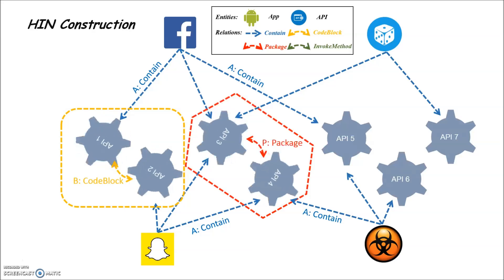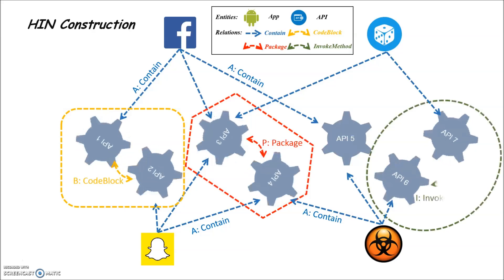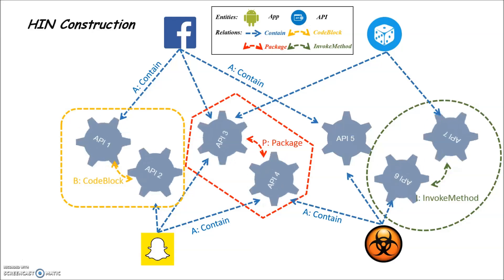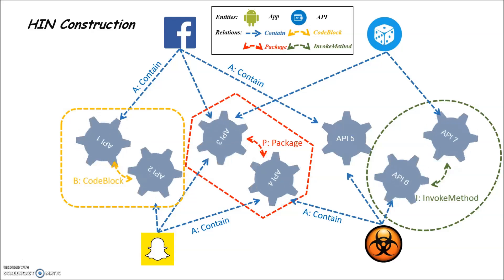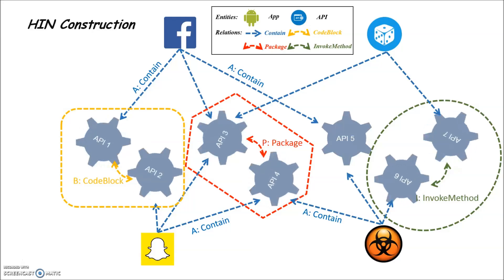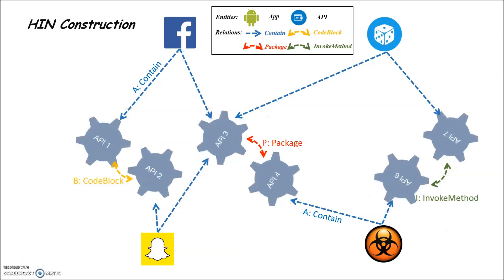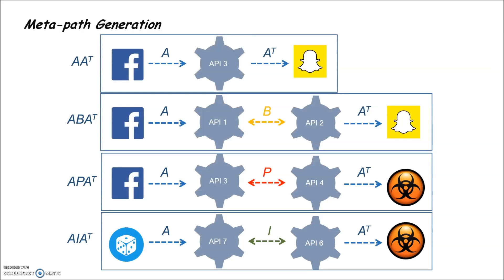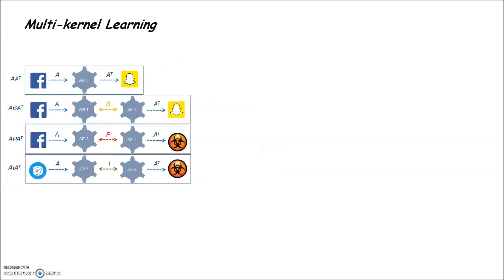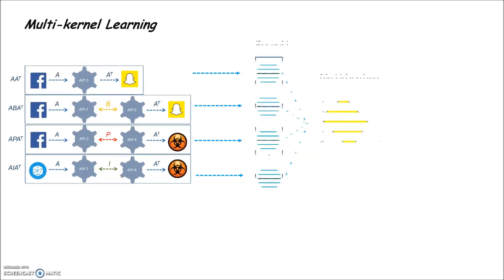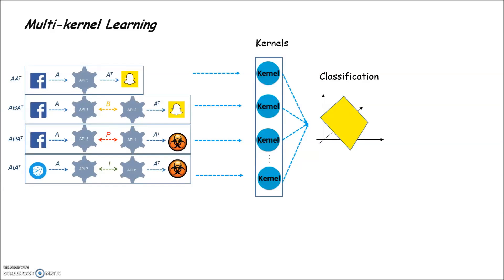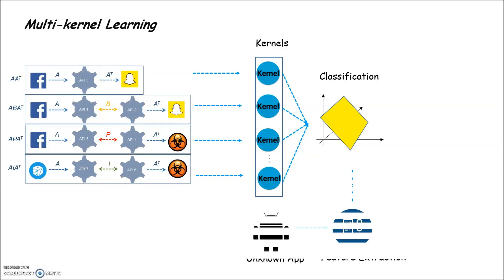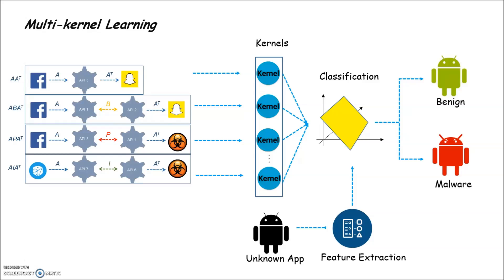In the constructed HIN, we have two types of entities — Android apps and API calls — and three types of relations. In this way, similarities over Android apps can be defined by different meta paths, and those meta paths can be automatically weighted by a multi-kernel learning algorithm and then used for Android malware detection.